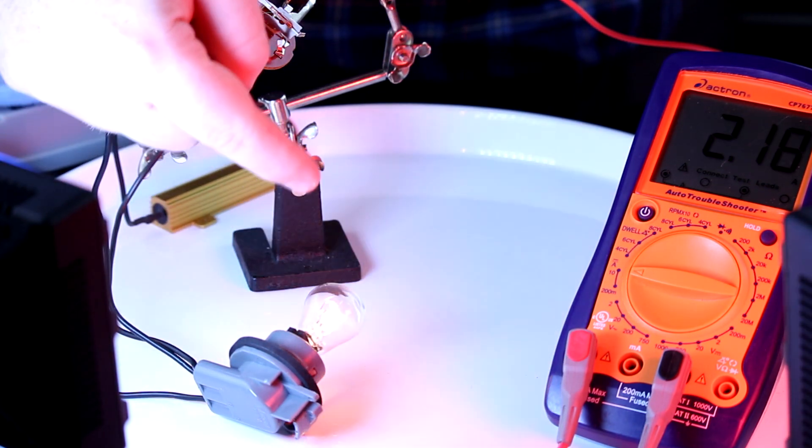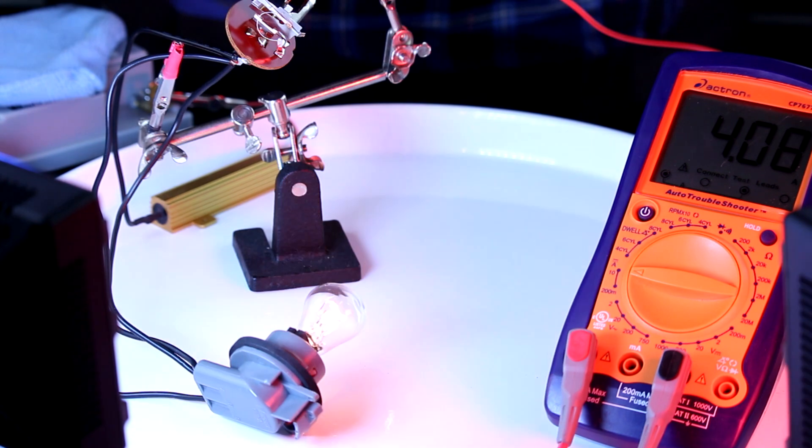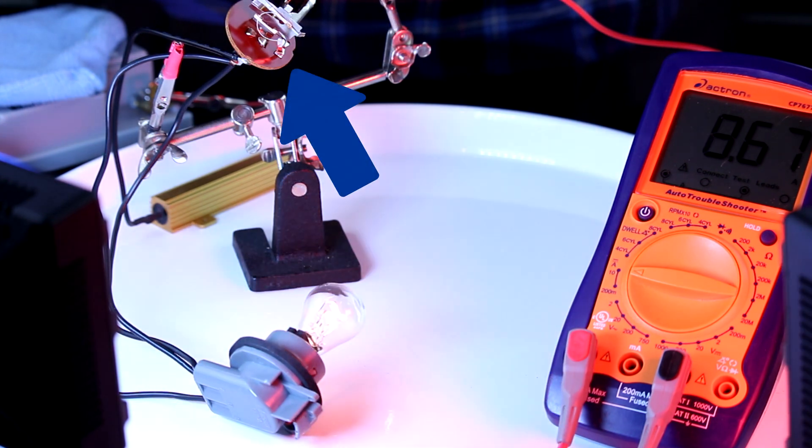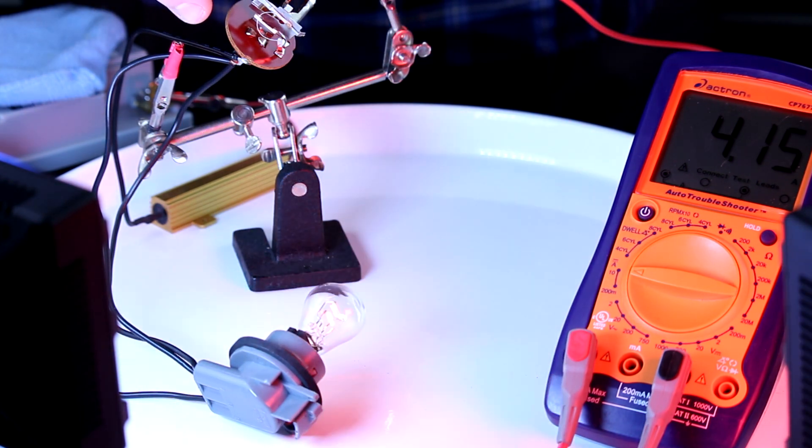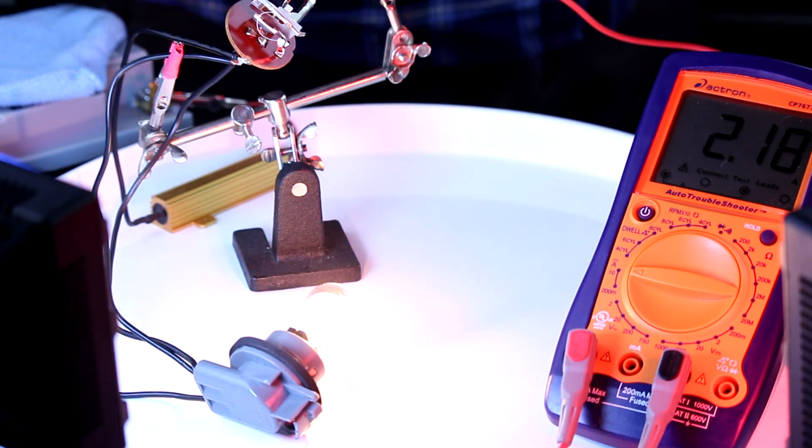Previously power could only flow through the two filaments of this bulb, and that was controlling how much power is flowing through this. But now there's an additional path that power can flow through, which goes from this flasher to the resistor, and from there to ground.